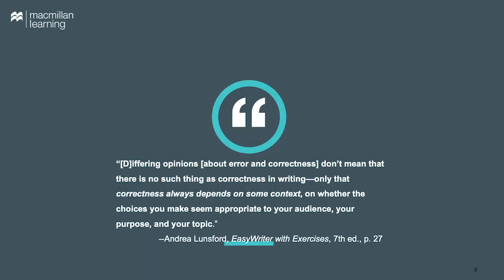It might be fun to have students start off the semester by writing a reflection about error or correctness or rules about writing. Students certainly will have thought about these topics from high school or other experiences. Have them reflect on this statement from EasyWriter: differing opinions about error and correctness don't mean there's no such thing as correctness in writing, only that correctness always depends on context — on whether the choices you make seem appropriate to your audience, your purpose, and your topic. These reflections can provide a low-stakes diagnostic for the beginning of the semester or an opportunity for a good class discussion.